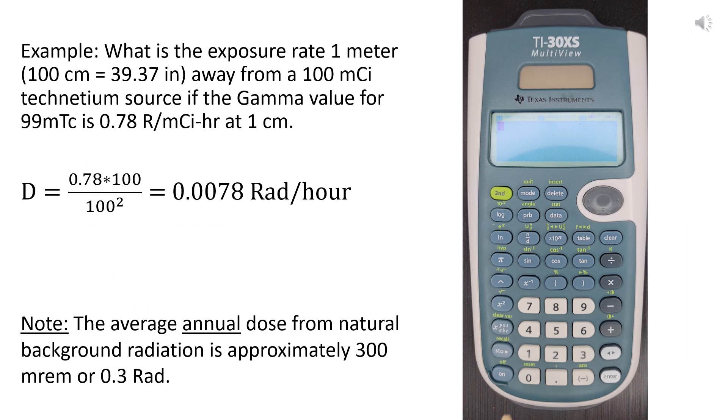For example, what is the exposure rate 1 meter, which is 100 centimeters or 39.37 inches, away from a 100 millicurie technetium source, if the gamma value for metastable technetium-99 is 0.78 roentgens per millicurie per hour at 1 centimeter distance?